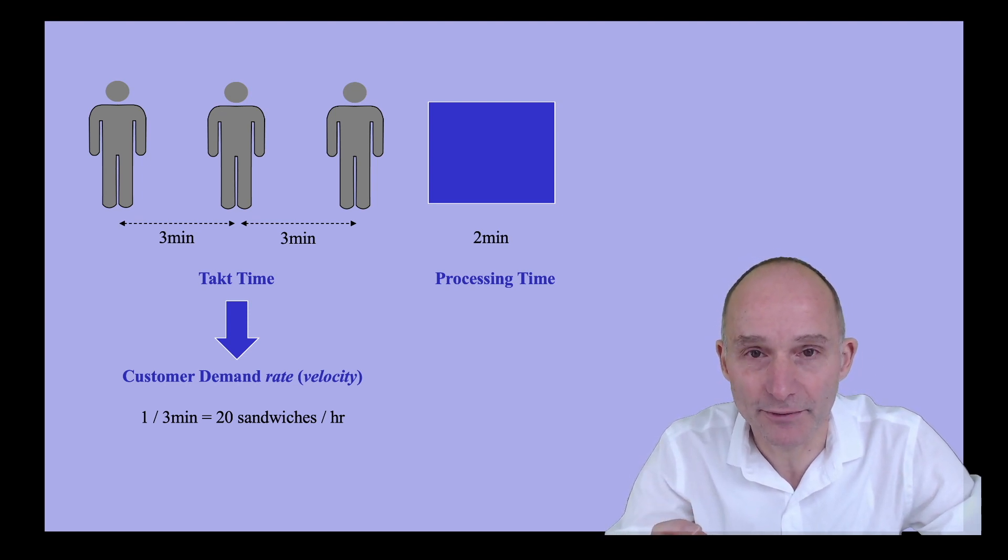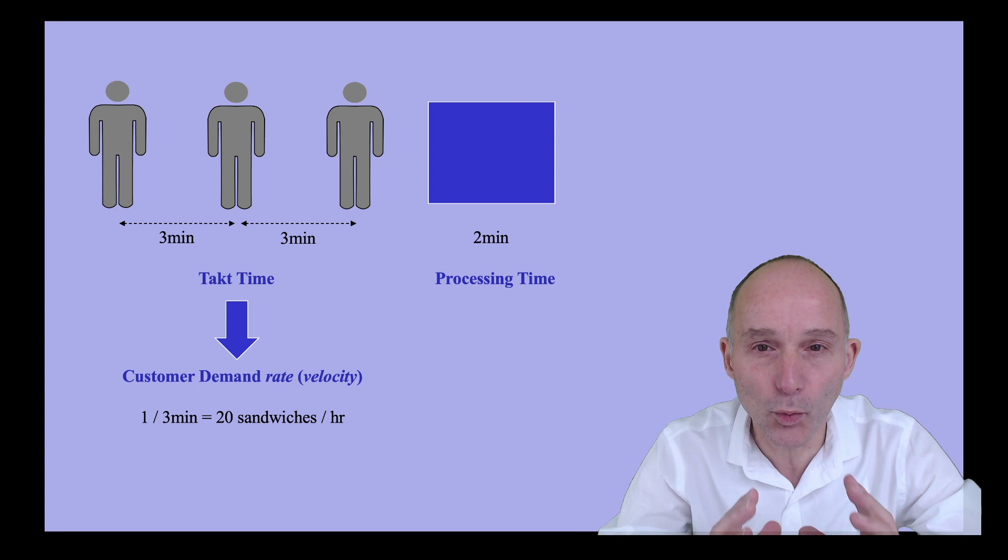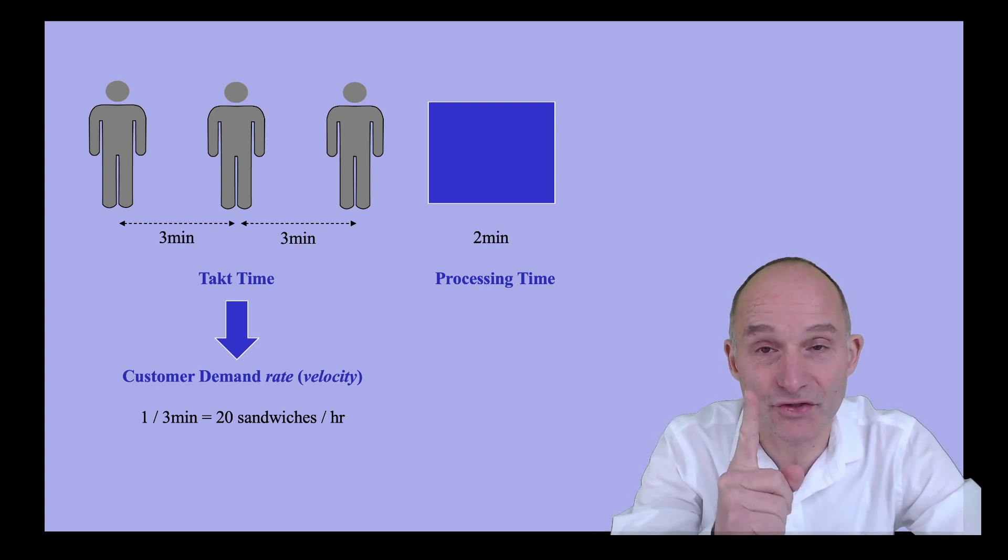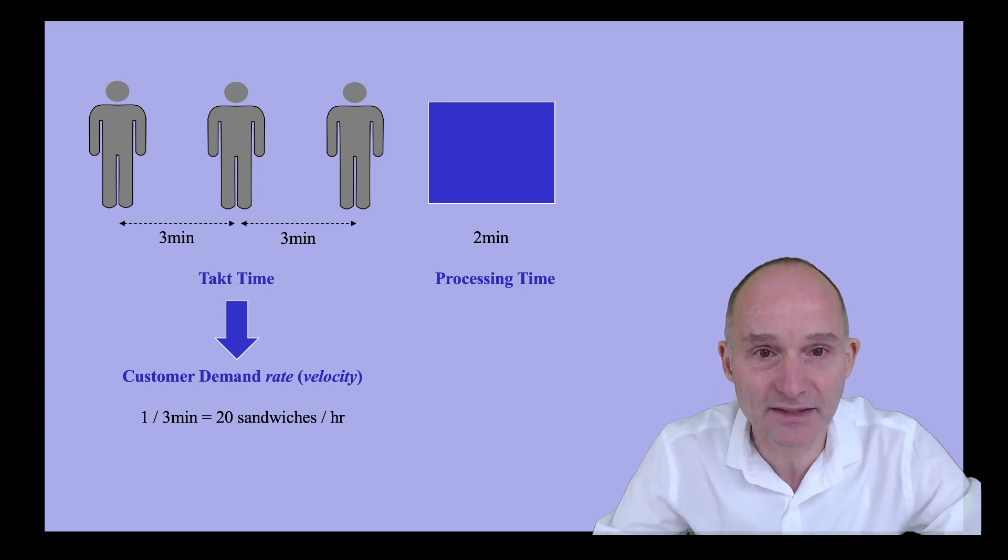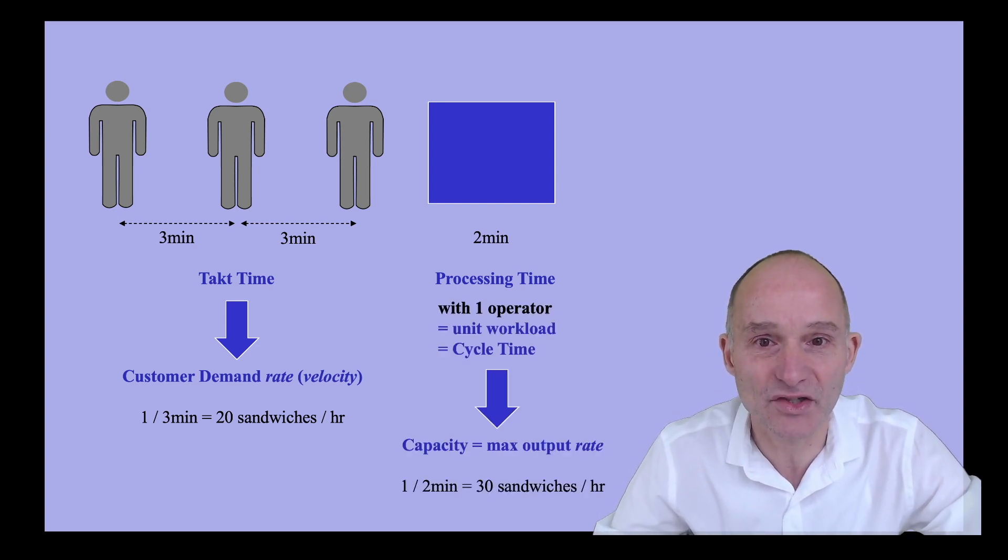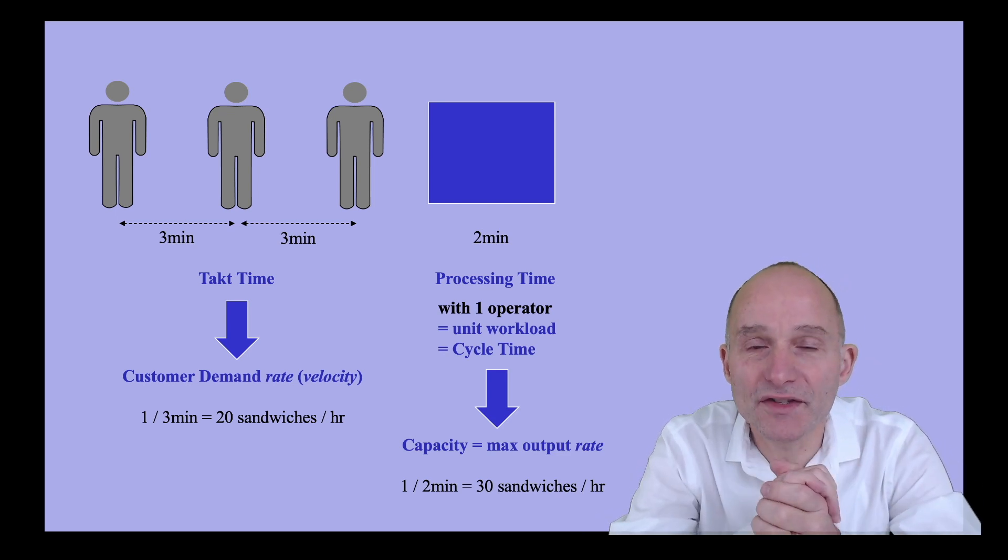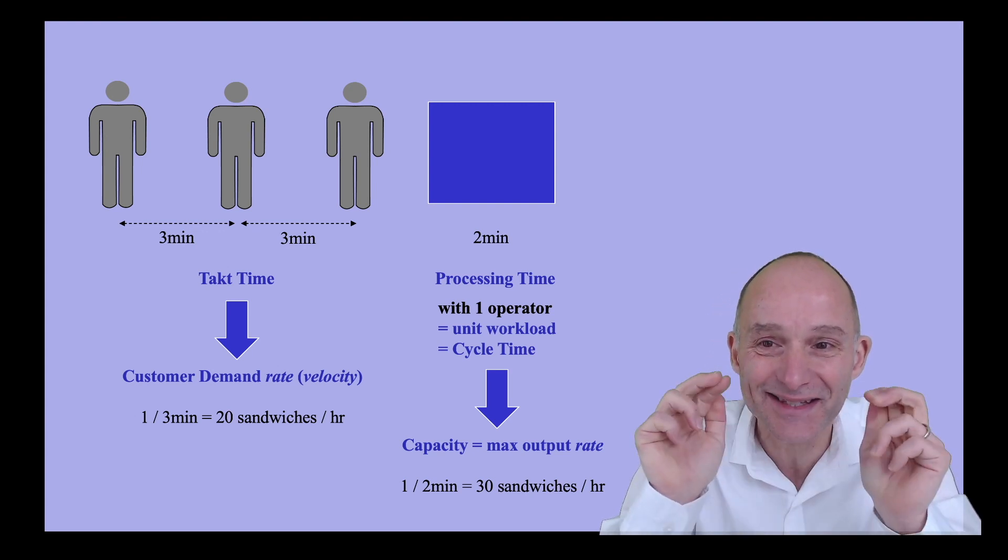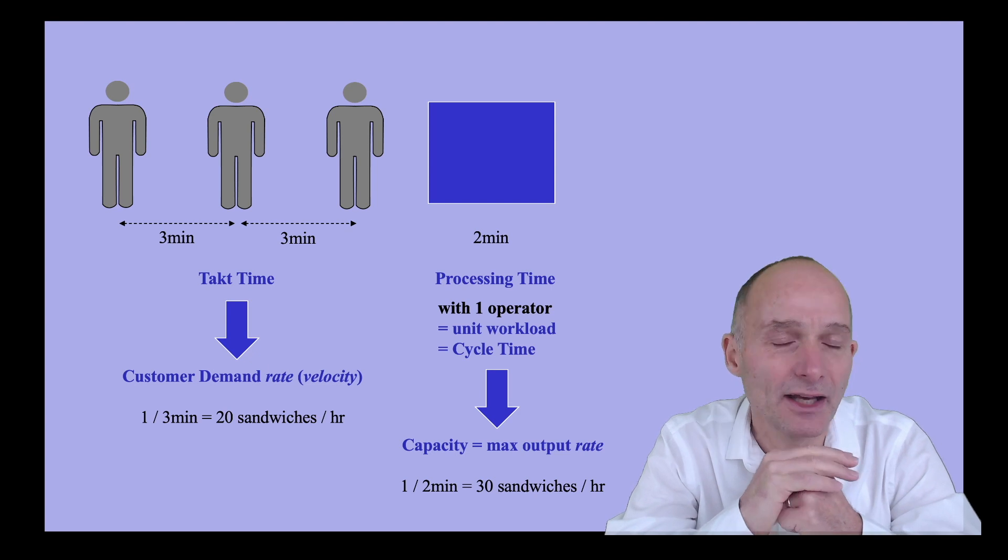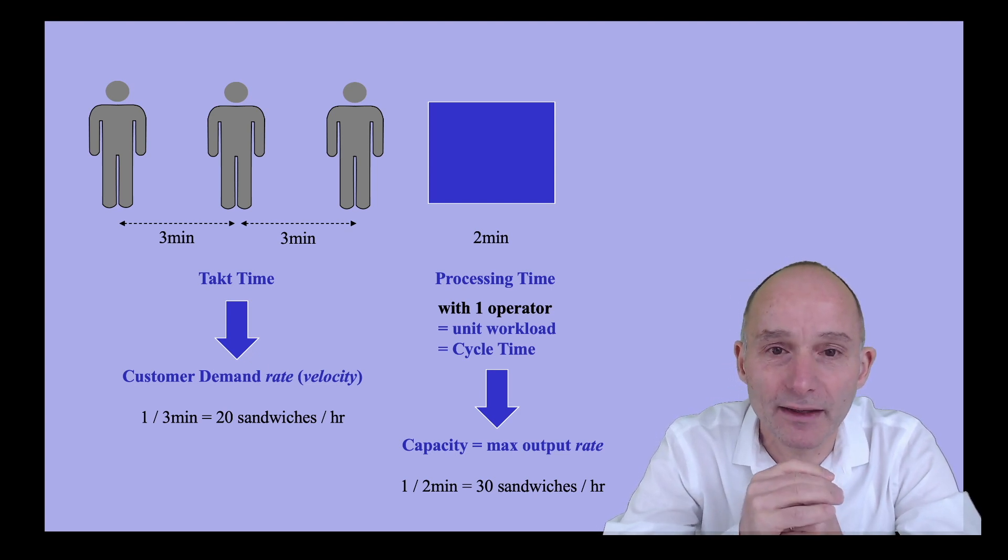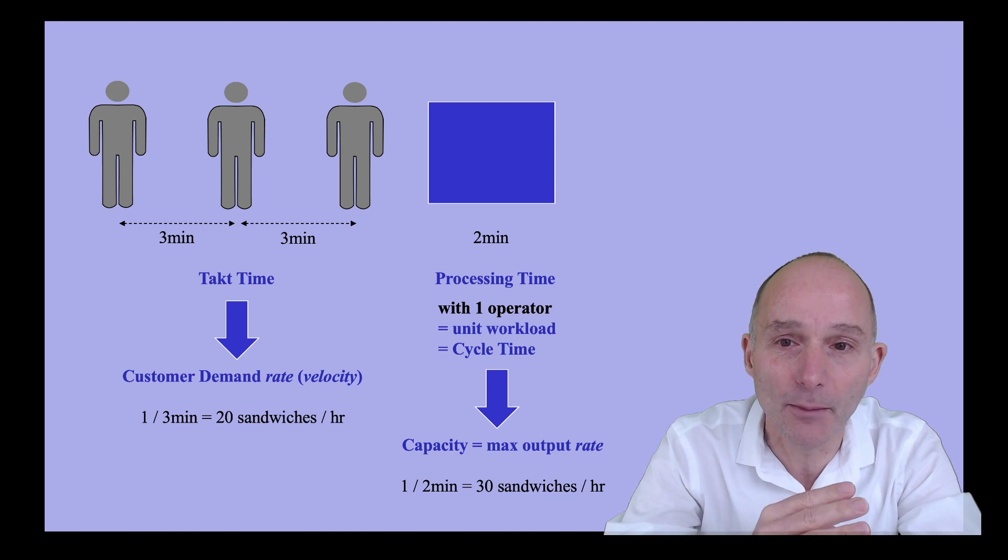This is where we have to be careful. If and only if all the work is performed by one processing resource, an operator or a machine, then the resource can at best process one sandwich each 2 minutes. I prefer to call this the unit workload of the operator. Yet it is customary in industry to refer to this 2 minutes as the cycle time. At Kellogg, we never use the word cycle time because it may have different meanings at different companies.